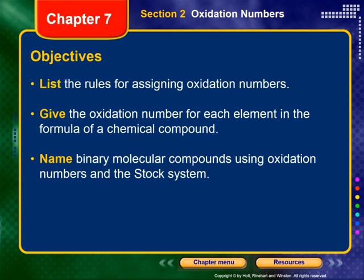And then name binary molecular compounds using oxidation numbers and the stock system. Remember, the stock system was that system of nomenclature that we learned last section, where we identify the charge on the cation using a Roman numeral.